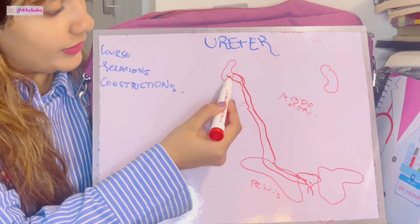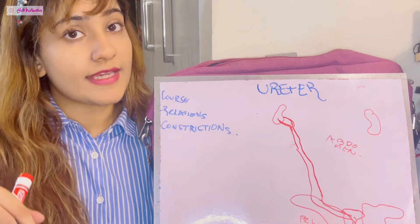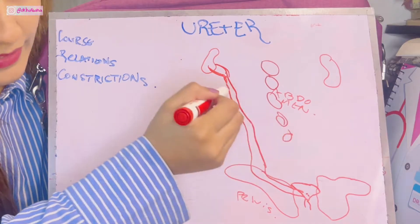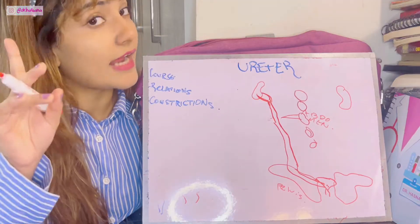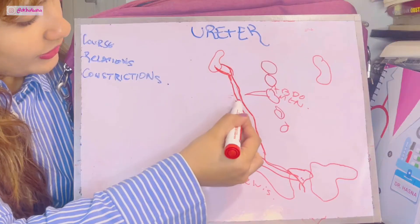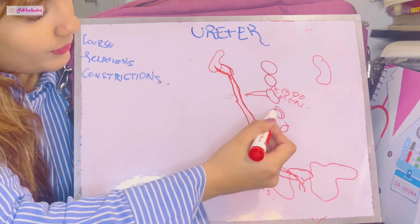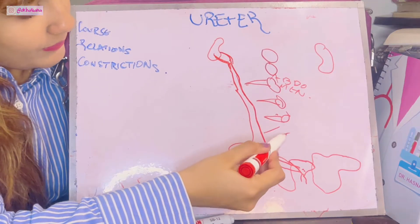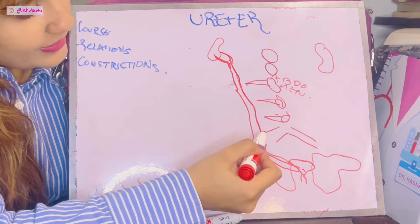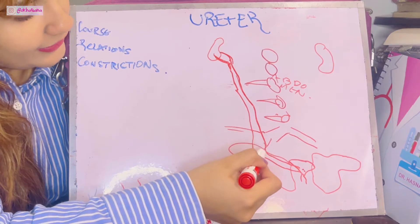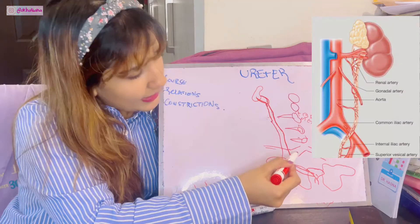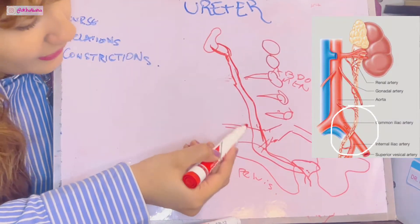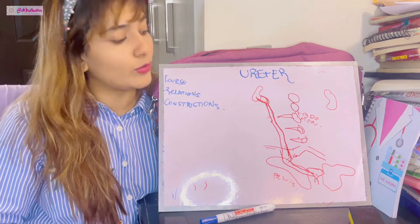The ureter begins from the renal pelvis, running downwards and medially. The vertebrae here have transverse processes, and the ureter passes across the tips of these transverse processes as it descends. Then comes a point where the aorta bifurcates into the two common iliac arteries, which terminate into the external and internal iliac arteries. Where the common iliac artery terminates is where the ureter enters the pelvis.